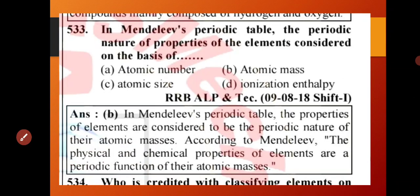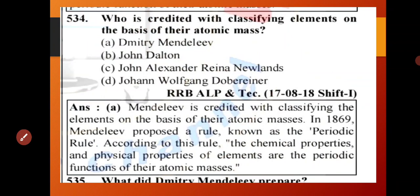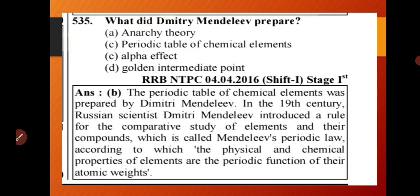In Mendeleev's periodic table, the periodic properties of the elements are considered on the basis of their atomic mass. Option A.